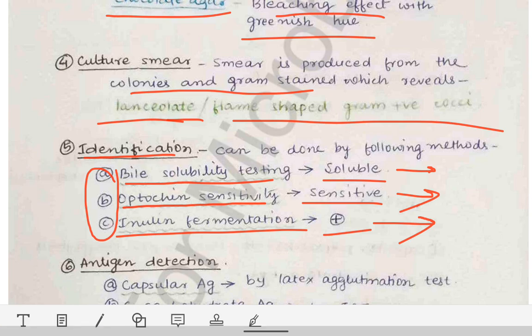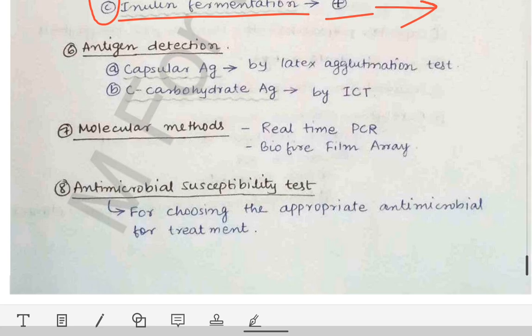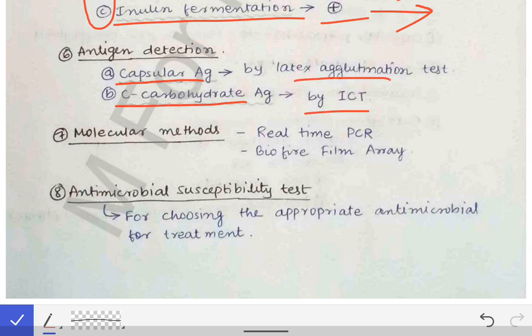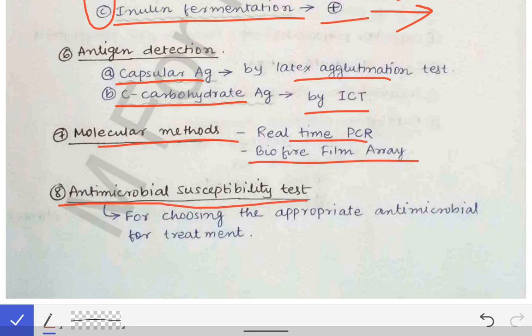For antigen detection, we can detect the capsular antigen or C-carbohydrate antigen of the bacteria by latex agglutination or immunochromatographic test. Molecular methods such as real-time PCR or biofilm array can also be used for diagnosis. Additionally, antimicrobial susceptibility testing can be done to find the best antibiotic for treatment.